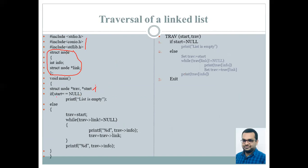We check if start equals null. If so, we print that the list is empty. It is the same as before. Else, we initialize the traversal's value equal to start and check till the time traversal link is not null.